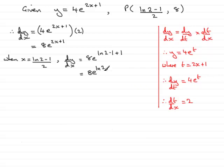If you're not sure of this, you can always type this in your calculator and you'll see that you'll get 2 for e to the natural log of 2. So 8 times 2 gives me a final gradient of 16. The gradient at P is 16.